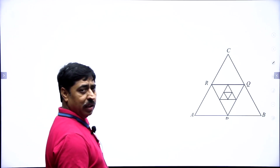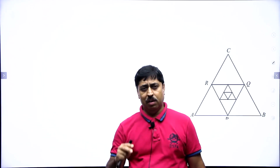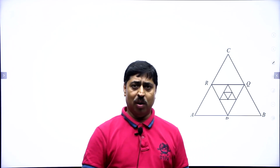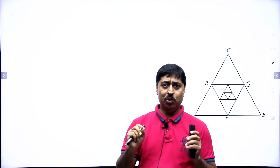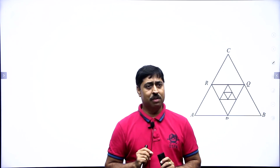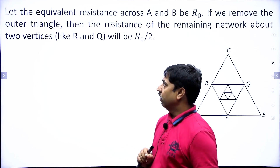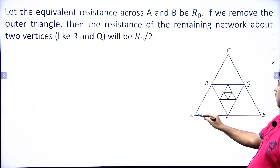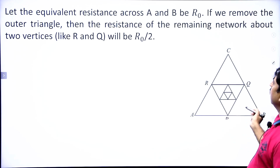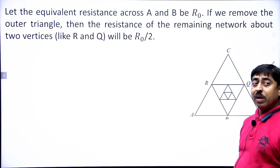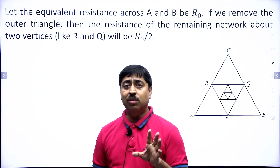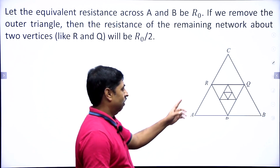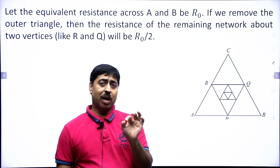This is the circuit that has been given to us, and there are two key aspects you must note if you want to solve this problem. The first one is: if we assume that the equivalent resistance between A and B is R₀, and if we remove the outer triangle, then the resistance of the remaining network about two vertices R and Q will be R₀/2.